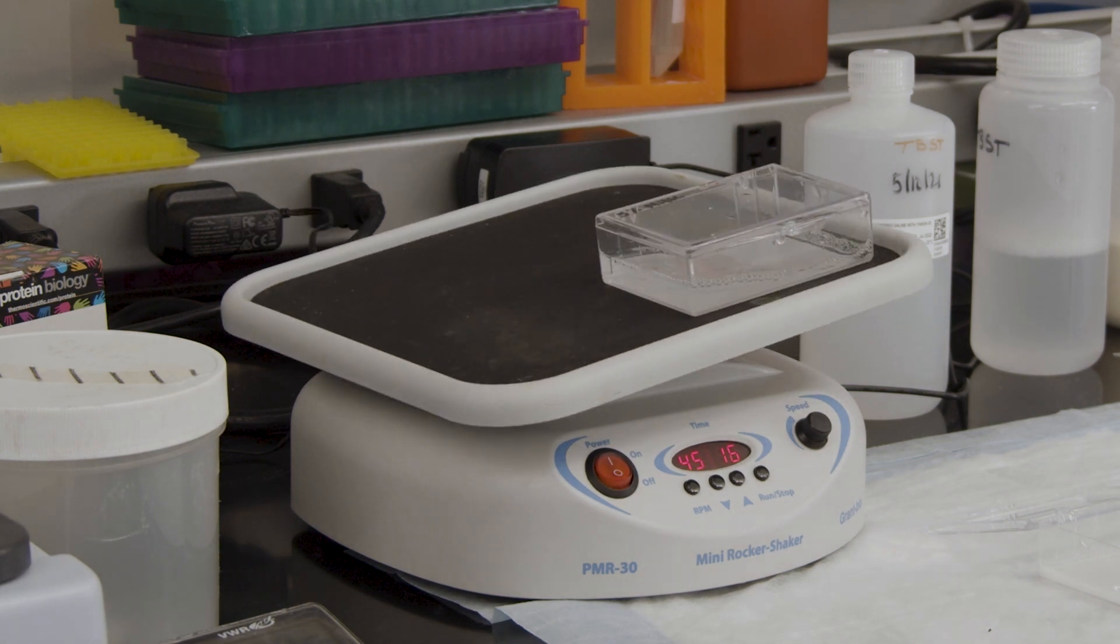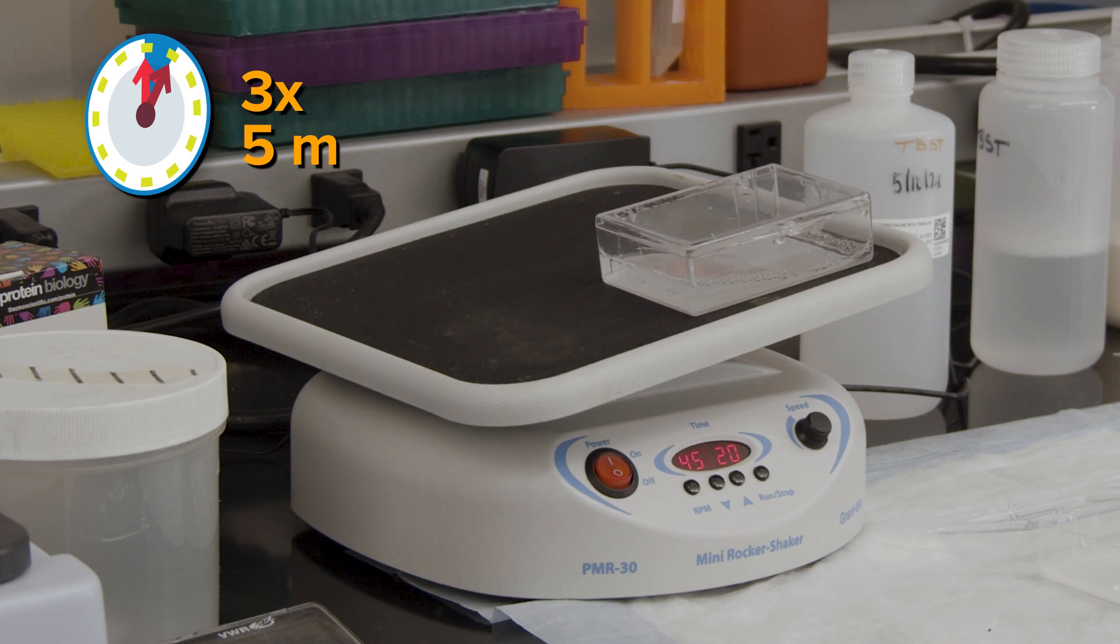After the primary antibody incubation is complete, wash the membrane three times for five minutes in the wash buffer, just like before. If your primary antibody is directly conjugated to a detection label, no secondary antibody is needed. You can go ahead and proceed with the chemiluminescence detection step.